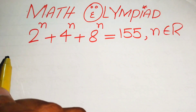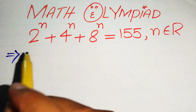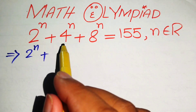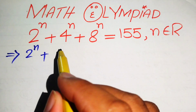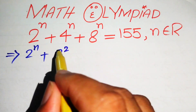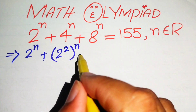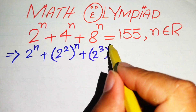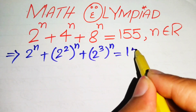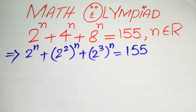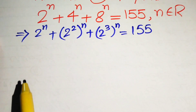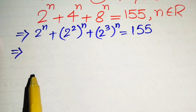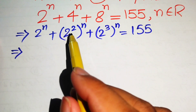The very first step is to rewrite this equation. We have 2 to the power of n, plus 4 written as 2 squared with its whole power n, plus 8 written as 2 cubed with its whole power n, equals 155.